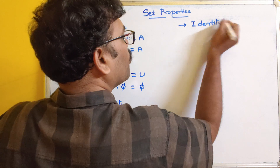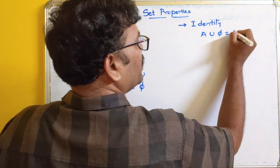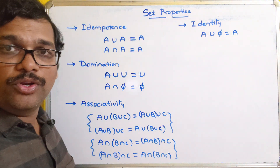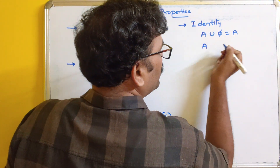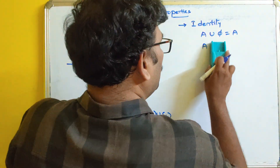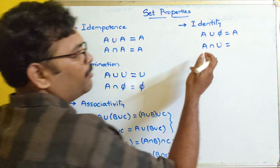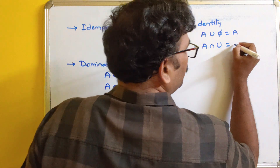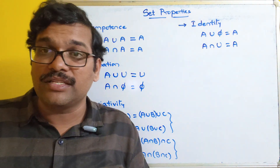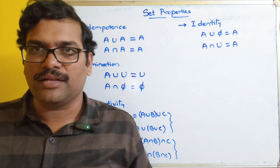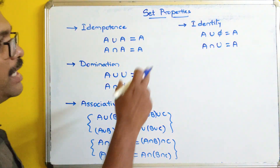The next property is the identity rule. If you compute A union phi (where phi is the null set), that gives A. And A intersection U (where U is the universal set) gives A itself, because all elements of A are contained in U since A is a subset of the universal set. This is the identity rule.